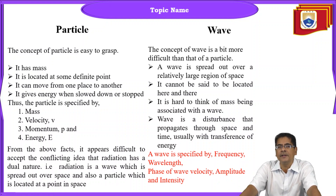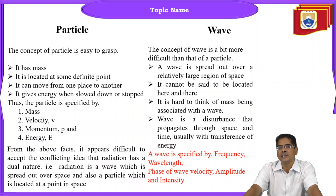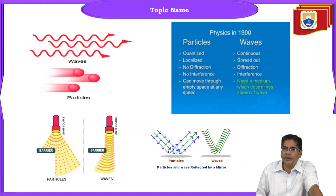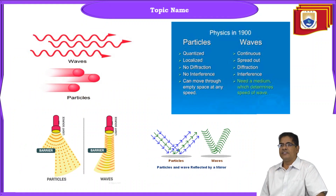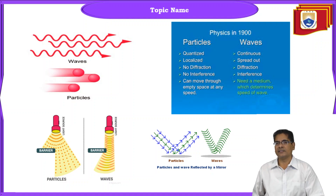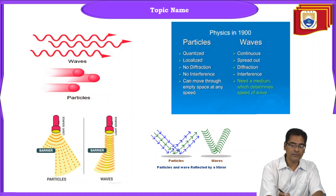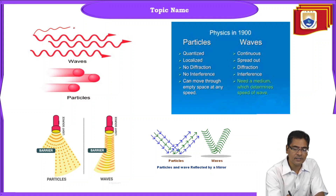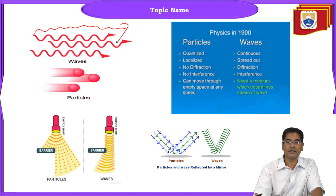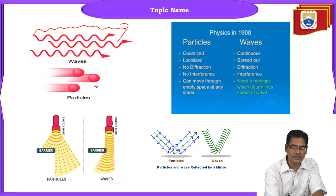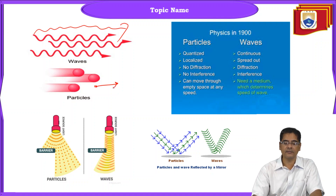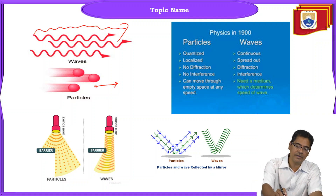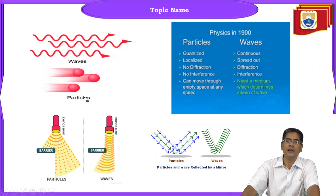From the above facts, it appears difficult to accept the conflicting idea that radiation has a dual nature — that is, radiation is a wave spread out over space and also a particle located at a point in space. Waves propagate in a distributed manner, whereas particles propagate as discrete localized entities.